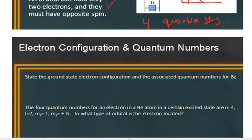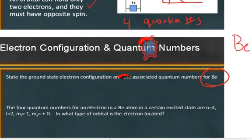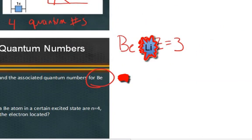And then let's practice this. State the ground state electron configuration and the associated quantum numbers for the element... has an atomic number of three, which means it has three electrons.